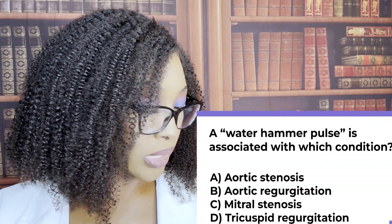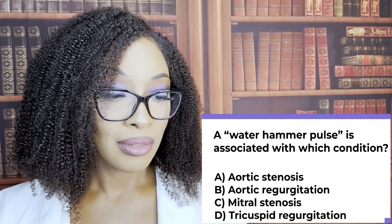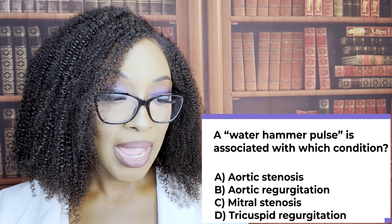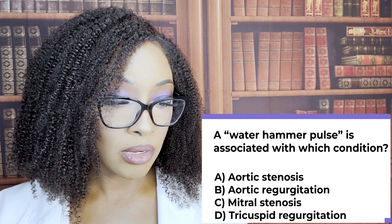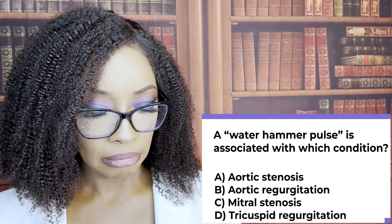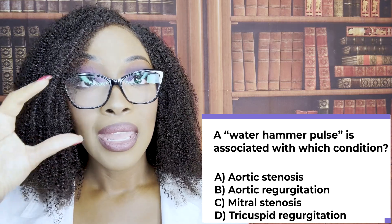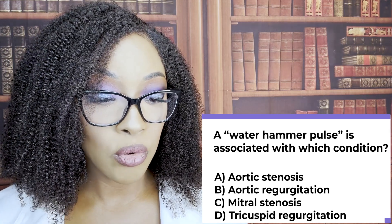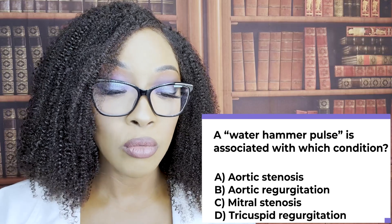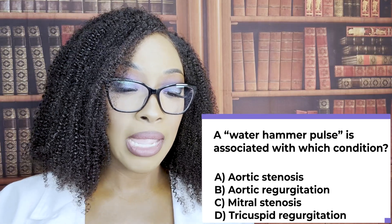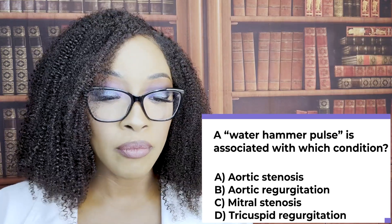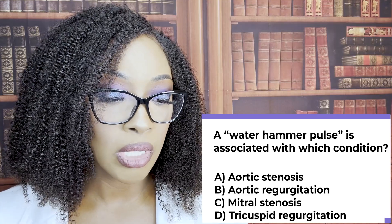Last question: a water hammer pulse is associated with which condition? A, aortic regurgitation; B, mitral stenosis; or C, tricuspid regurgitation? The correct answer is B — actually, aortic regurgitation. When you see 'water hammer pulse,' think aortic regurgitation. It causes a bounding, forceful pulse due to rapid runoff of blood from the aorta back into the left ventricle.